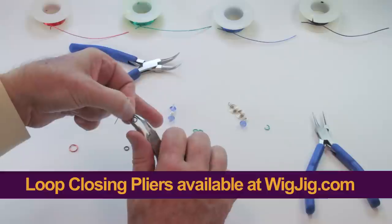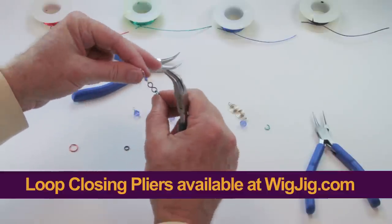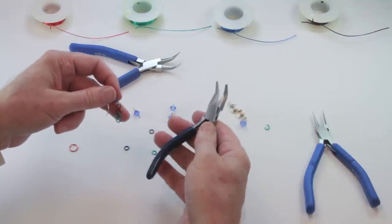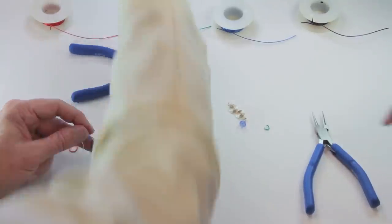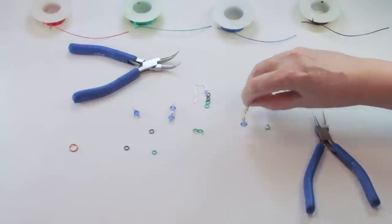That's why you call them loop closing pliers. They work great. You have to get used to them, but once you do, they're fabulous. So you can see that they closed the gap there. And where did this component here, I think is interesting. How did you make these spirals? I love them.